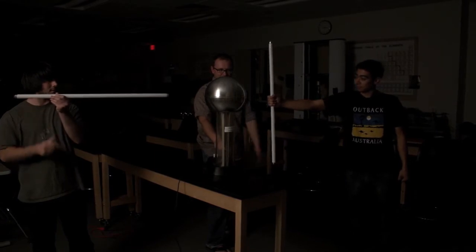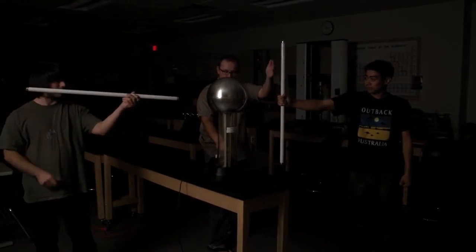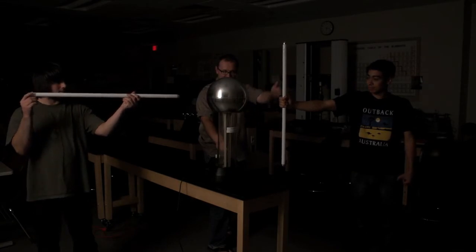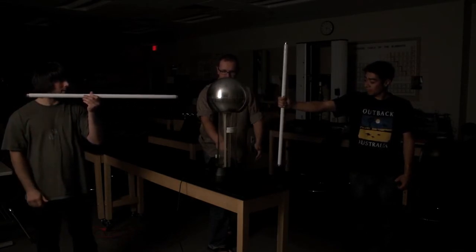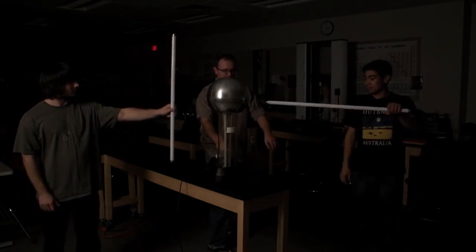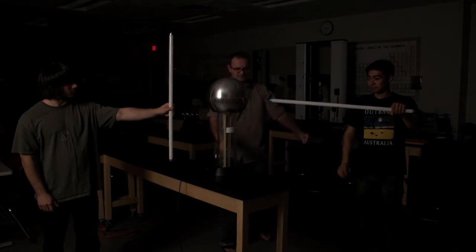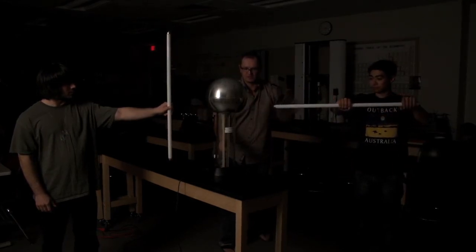So what happens here is, for example, Alex is holding his light bulb along an equipotential, so there's not a huge difference in voltage. Whereas when he holds it this way, there's a large potential difference between the dome and going outwards radially from the dome, so more current flows.